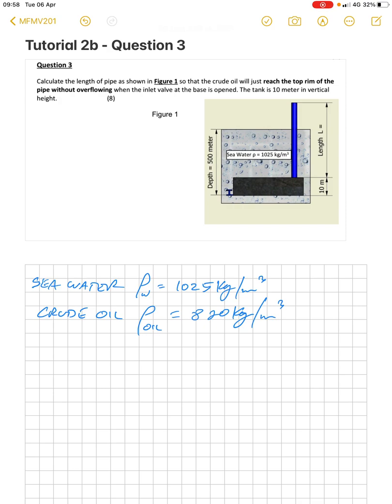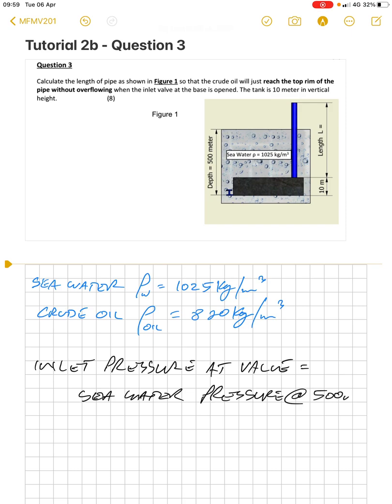The inlet pressure at the valve is equal to the seawater pressure at 500 meters. You can see on the left-hand side, bottom of the tank, we have the inlet valve.